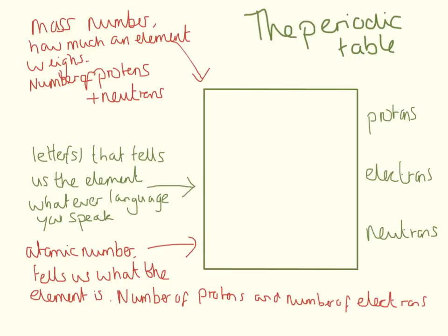For fluorine: the symbol is F, the mass number is 19, and the atomic number is 9. Protons equal the atomic number, so fluorine has 9 protons. Electrons also equal the atomic number, so fluorine has 9 electrons. Neutrons equal mass number minus atomic number: 19 minus 9, so fluorine has 10 neutrons.